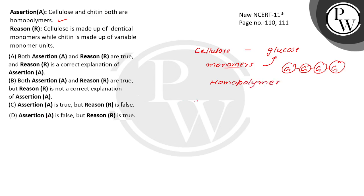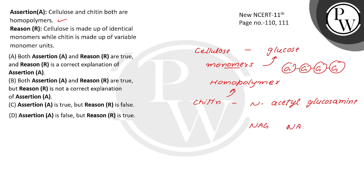If we talk about chitin — chitin is also a homopolymer. What is the monomer unit? N-acetyl glucosamine. This is the monomer unit, and here we will get N-acetyl glucosamine as the monomer unit. If we write N-acetyl glucosamine repeatedly, this is the long chain. The monomer is the same type, so it is a homopolymer.